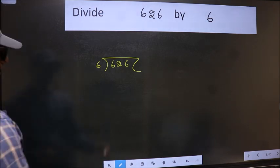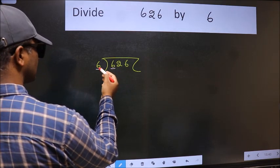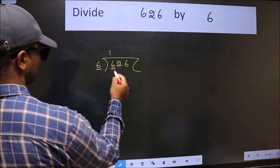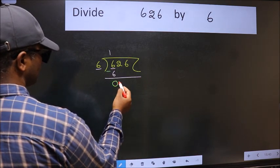Next, here we have 6 and here also 6. When do we get 6 in the 6 table? 6 ones is 6. Now we should subtract. We get 0.